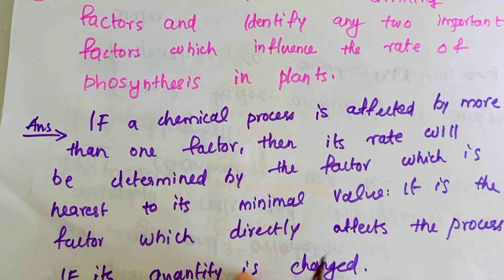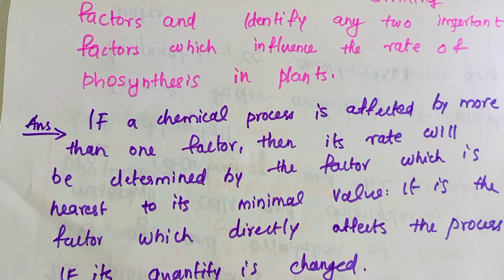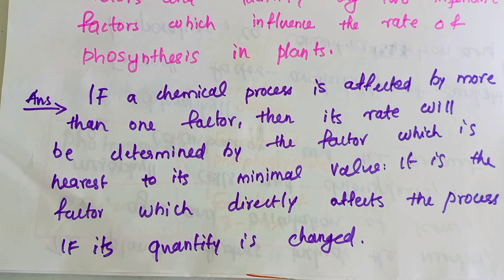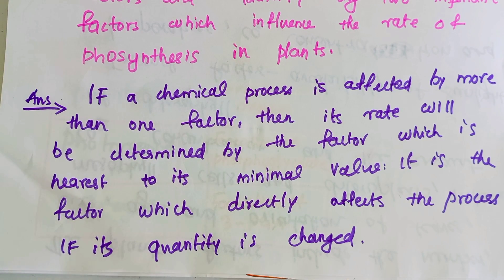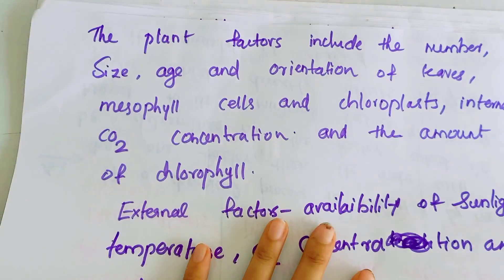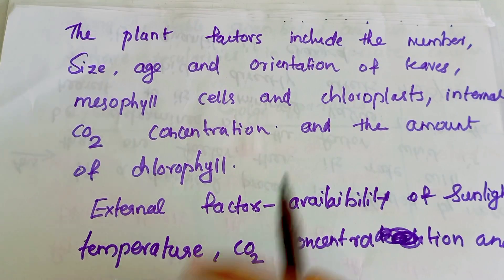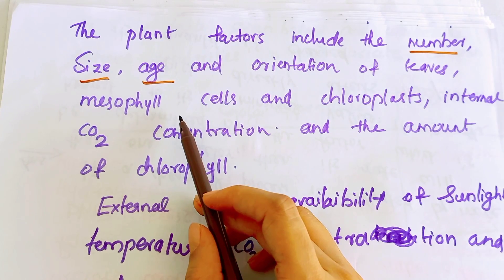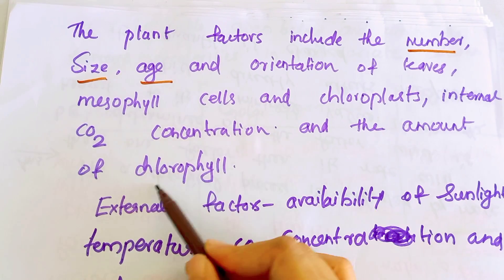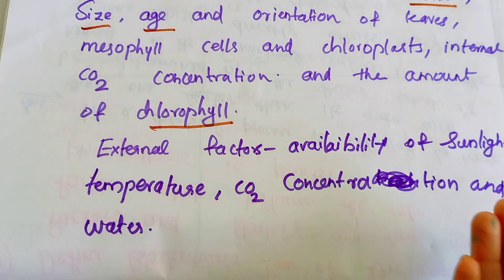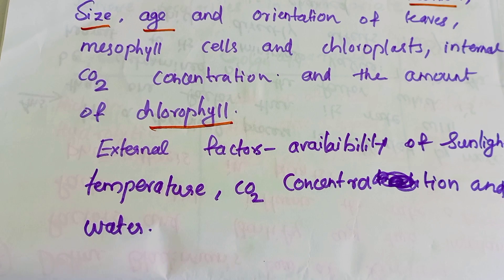If a chemical process is affected by more than one factor, its rate will be determined by the factor nearest to its minimal value — this is Blackman's Law of Limiting Factors. Factors affecting photosynthesis include external factors such as sunlight, temperature, carbon dioxide concentration, and water, and internal plant factors such as number, size, age and orientation of leaves, mesophyll cells, chloroplasts, internal CO2 concentration, and amount of chlorophyll.